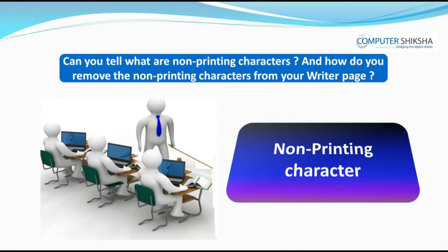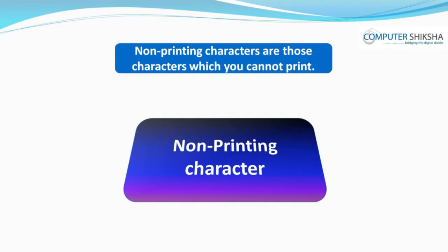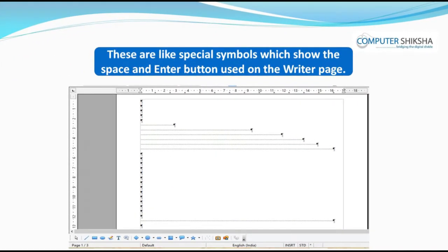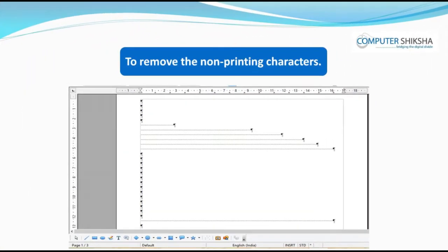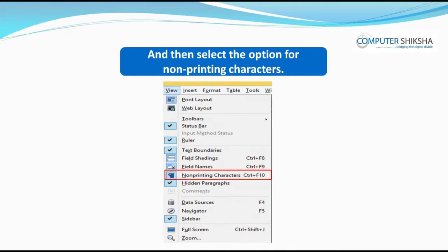Can you tell what are non-printing characters and how do you remove them from your Writer page? Non-printing characters are those characters which you cannot print. These are like special symbols which show the space and enter button used on the Writer page. In order to remove the non-printing characters, first you need to click on the View menu and then select the option for non-printing characters that appears in the box that opens.